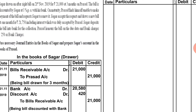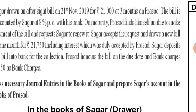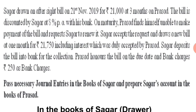Now let's see what happens on maturity. Adding 3 months to 21st November gives: 21st December, 21st January, 21st February 2020, plus 3 grace days = 24th February 2020 is the maturity date.